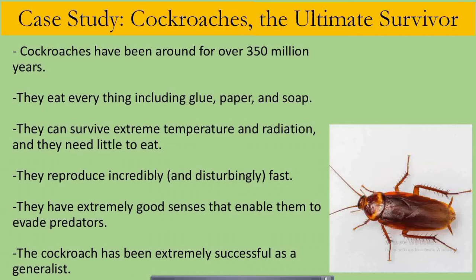Studies show that cockroaches have been around for over 350 million years. They eat everything, including glue, paper, and soap. They can survive in extreme temperature and radiation, and they need only little to eat. They reproduce incredibly and disturbingly fast. They have extremely good senses that enable them to evade predators. The cockroach has been extremely successful as a generalist.